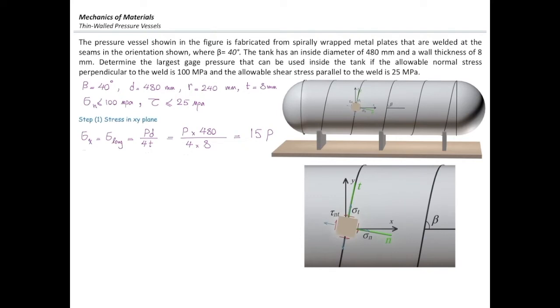Sigma y is hoop stress, and that can be determined from PD over 2T equation, but I don't need to determine that. Why? Because we know that stress in the hoop direction is always twice the stress in the longitudinal direction. So, that would be 30P.